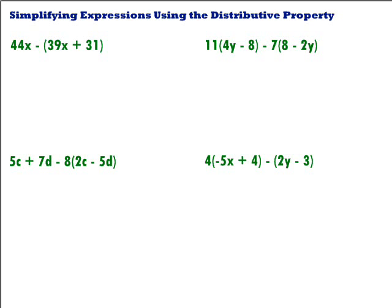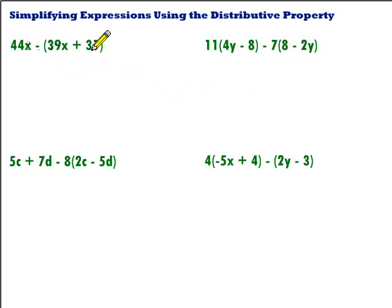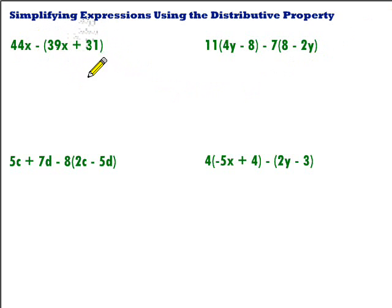Let's take a look at simplifying some expressions using the distributive property. Anytime we look at an expression that we're asked to simplify and we see parentheses, the distributive property should immediately come to mind. The distributive property allows us to get rid of those parentheses by simply multiplying through whatever is in front — or sometimes behind — those parentheses by what's inside them.